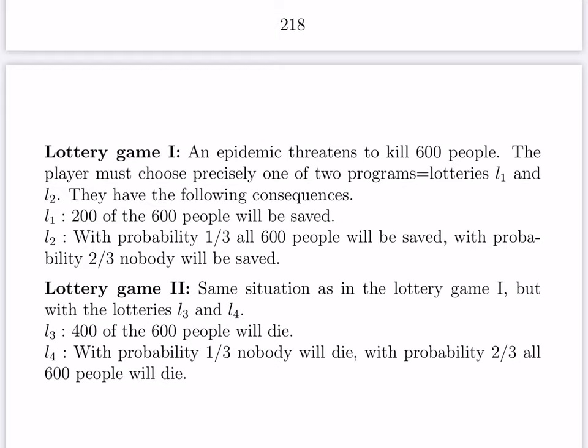Lottery game two: again an epidemic threatens to kill 600 people, and the player must choose between L3 and L4. L3: 400 of the 600 people will die, and 200 will not. L4: with probability one-third, nobody will die; with probability two-thirds, all 600 people will die. One immediately observes that L1 equals L3, L2 equals L4, and the two lottery games are mathematically identical.